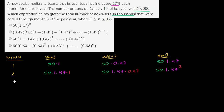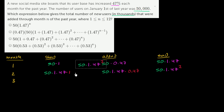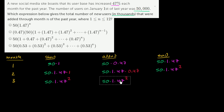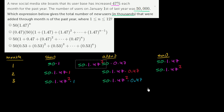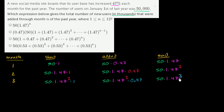Let's go to month three. We start the month with 50 times 1.47 squared. We add that times 0.47. So we end up with 50 times 1.47 squared times 1.47, plus the 0.47 portion — that equals 50 times 1.47 to the third power.